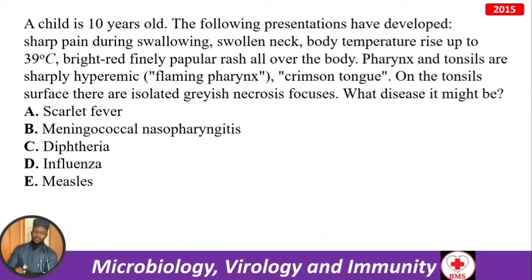A 10-year-old child: sharp pain during swallowing, swollen neck, temperature up to 39°C, popular rash all over the body, pharynx and tonsils sharply hyperemic — called flaming pharynx — crimson tongue, and isolated brush necrosis on the tonsil surface. The diagnosis is scarlet fever.